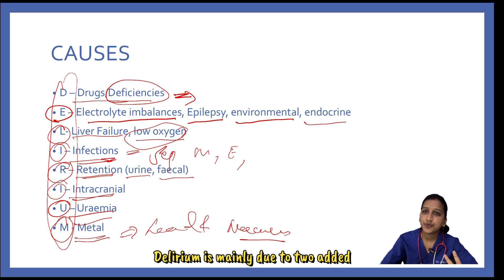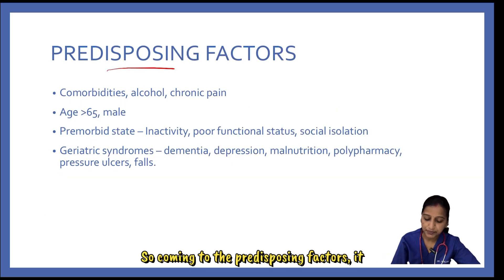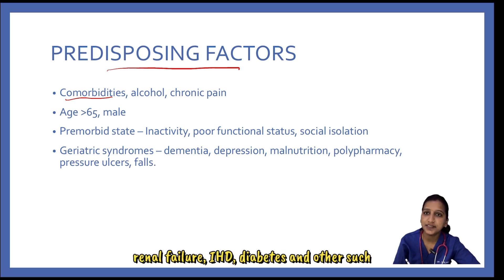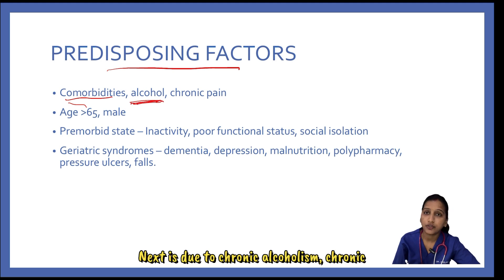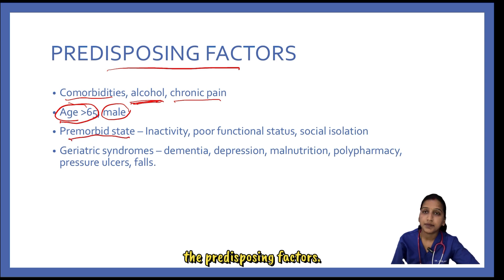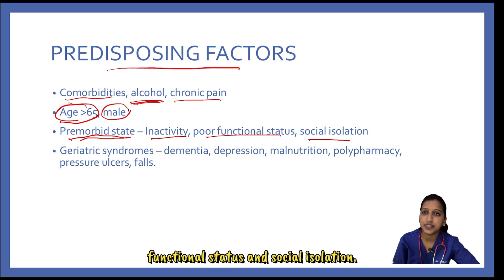Delirium is mainly due to two added reasons: the predisposing factor and the precipitating factor that has led to the present delirium. Predisposing factors can be due to comorbidities with underlying liver disease, chronic renal failure, IHD, diabetes, and other conditions. Next is chronic alcoholism, chronic pain, age more than 65, and male gender. Coming to premorbid state like inactivity, poor functional status, and social isolation.